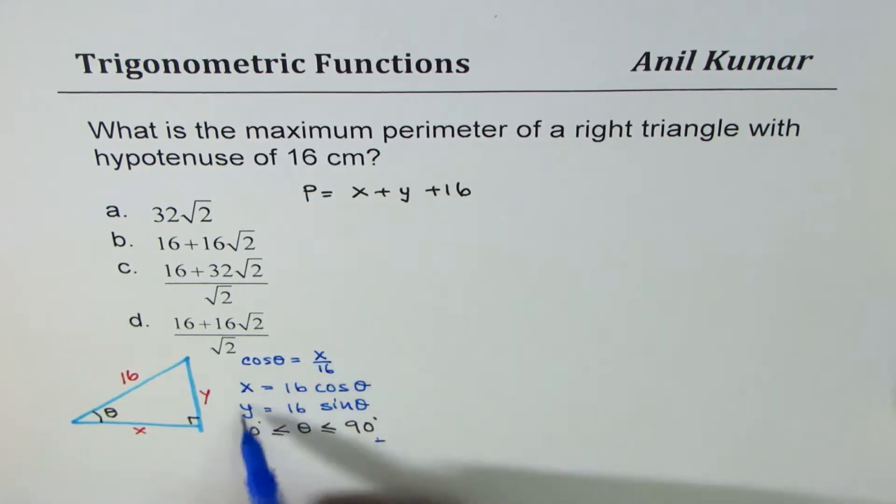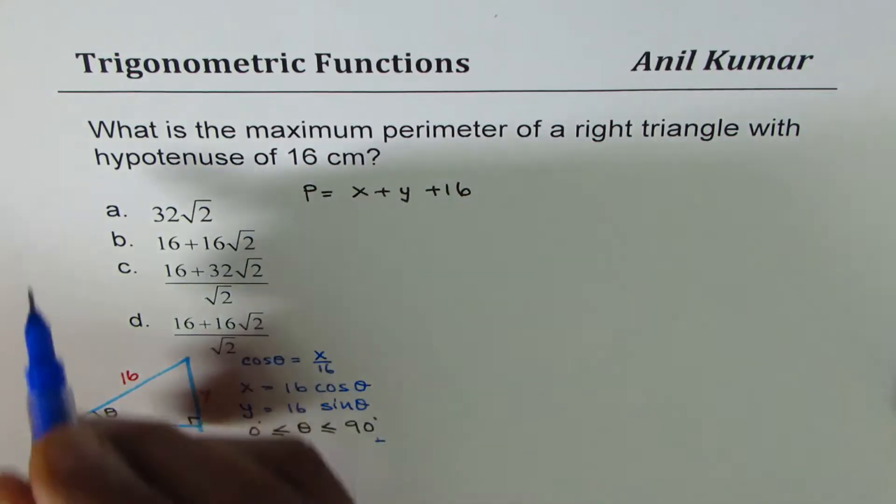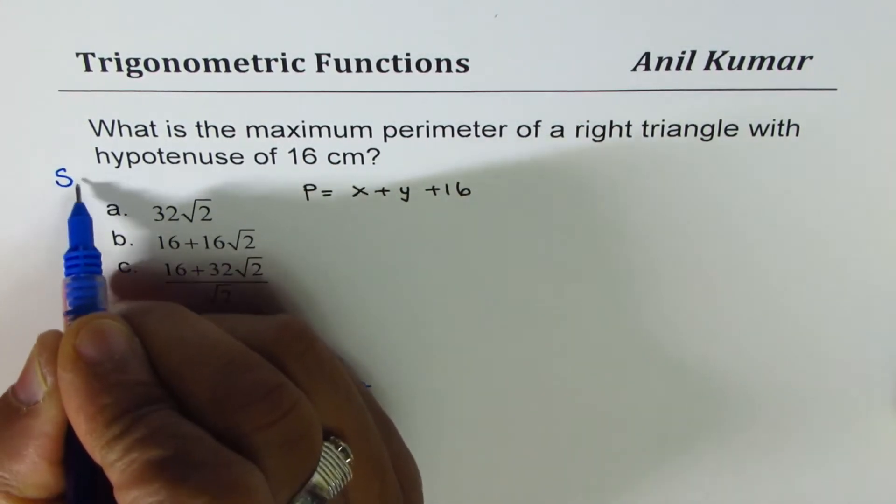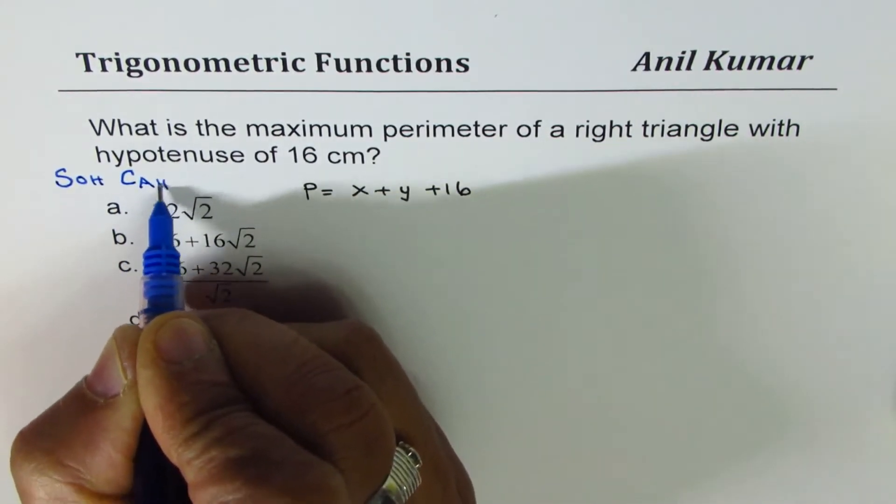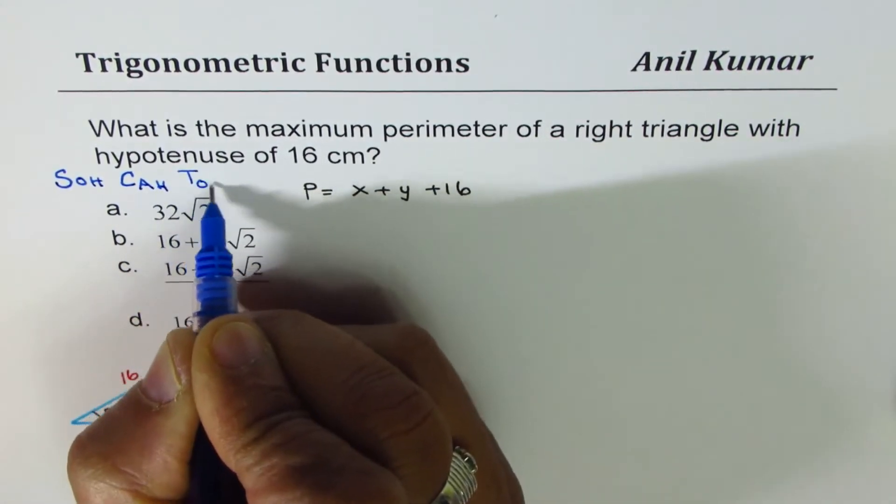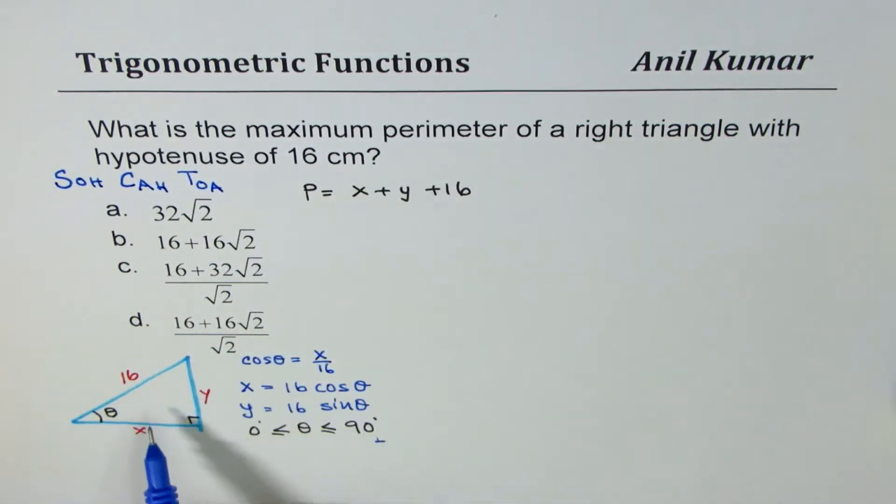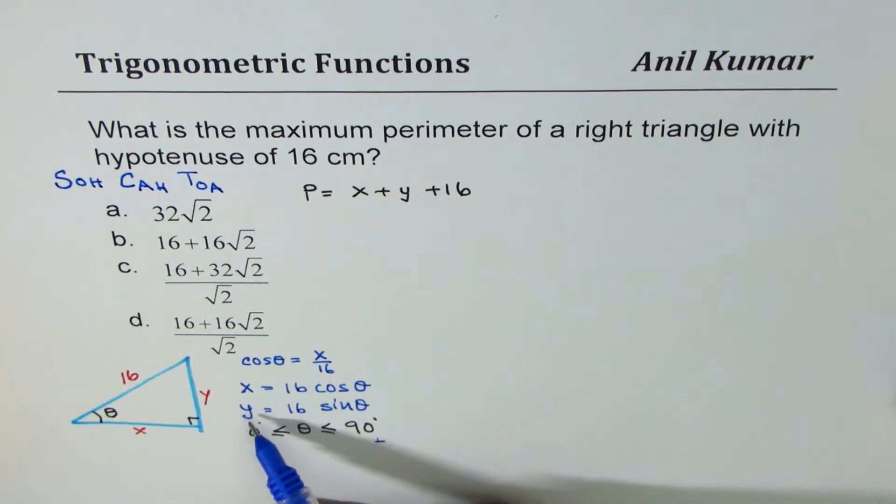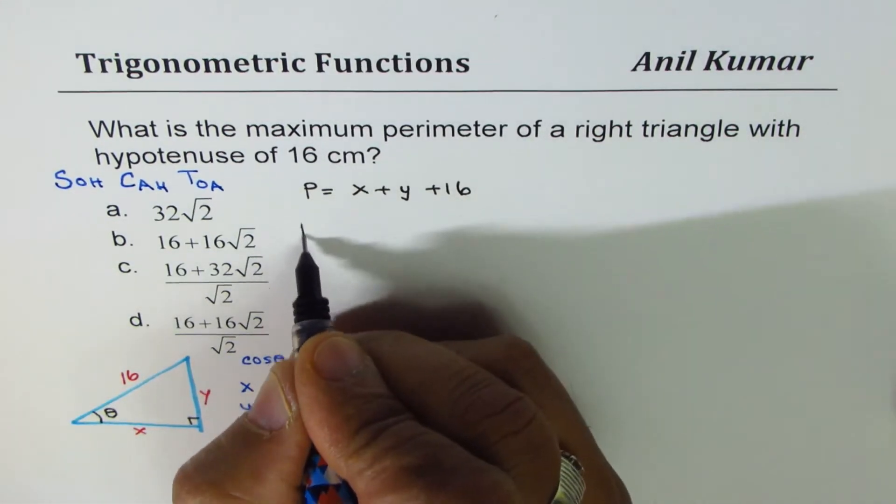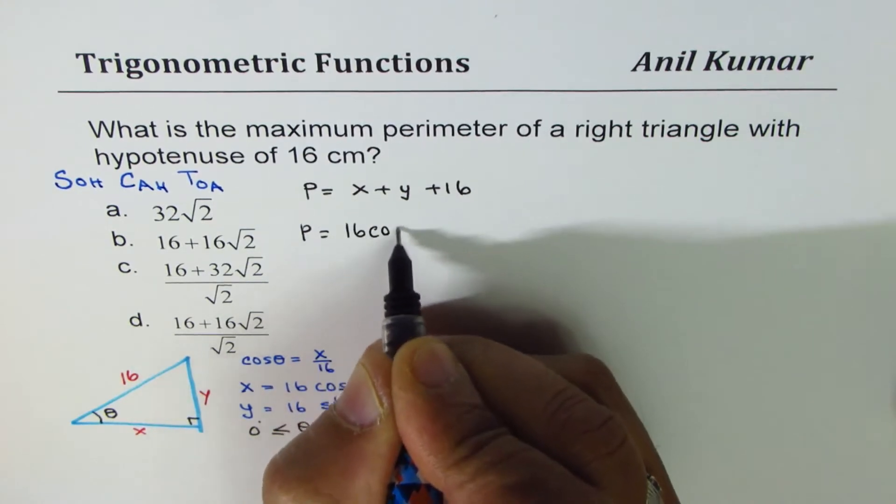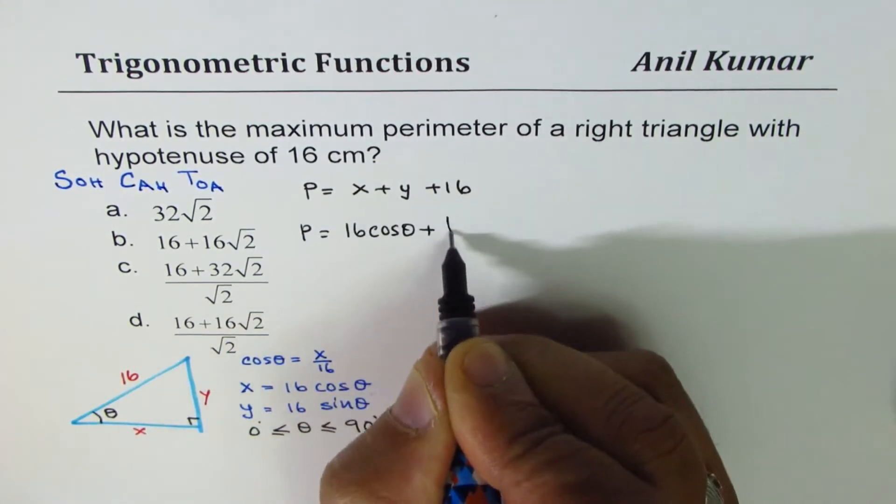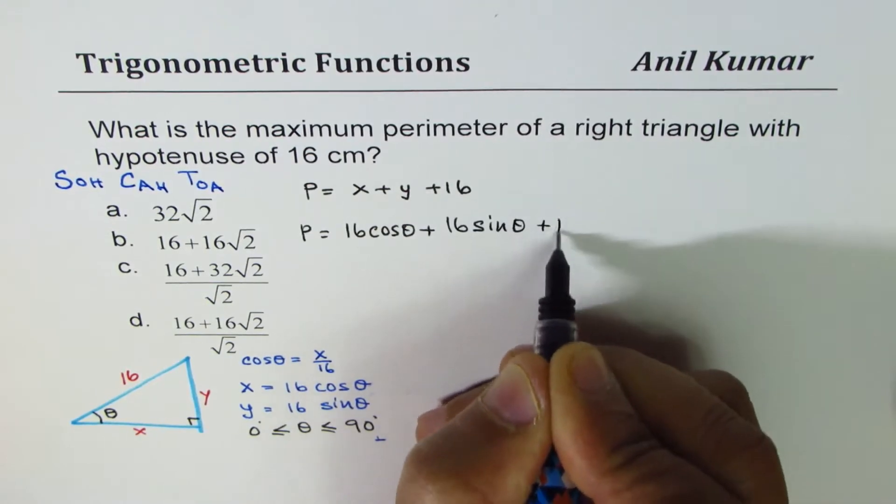You could remember the trigonometric ratios using SOHCAHTOA: sin is opposite over hypotenuse, cos is adjacent over hypotenuse, tan is opposite over adjacent. Once we know x and y, we can write the perimeter in terms of x and y. So we write parameter as P = 16 cos theta plus 16 sin theta plus 16.